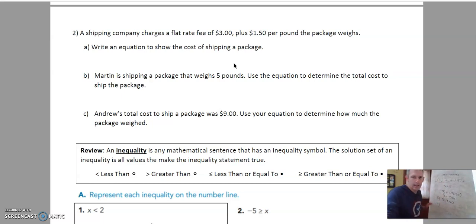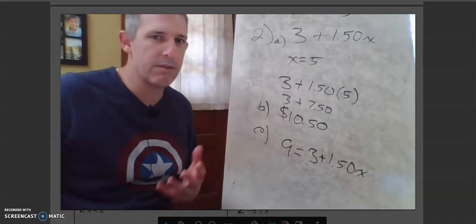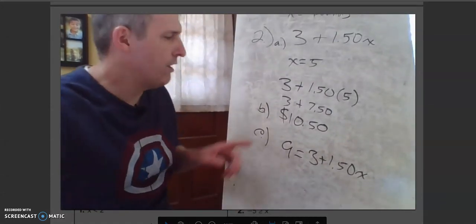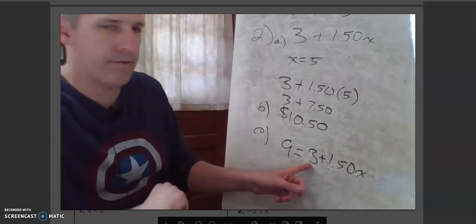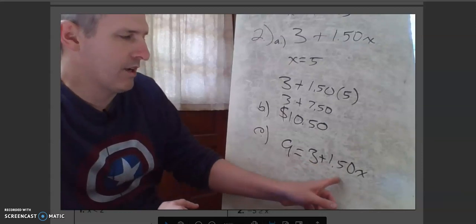C is Andrew's total cost of the shipping and package was nine dollars. Okay so this is where we're actually going to need this to be an equation. Okay so the total cost was nine dollars. That's on this side and that equals three plus a dollar fifty x. Okay now this gets into some stuff that we really haven't talked about much. Two-step equations. Okay but it's not so bad. We can figure this out. All right we know that the total consists of three dollars being a flat fee plus a dollar fifty per pound.